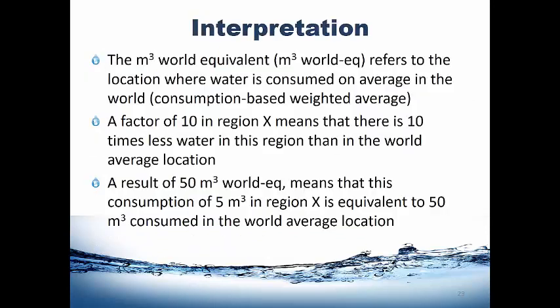To interpret AWARE: the cubic meter world equivalent refers to the location in the world where water is consumed on average, because it's a consumption-based weighted average. A factor of 10 in a specific region X means there is 10 times less water in that region than in the world average location — since the fraction is inverted. A result of 50 cubic meter world equivalent, from a consumption of 5 cubic meters, means that consumption would be equivalent to consuming 50 cubic meters in the world average location. The idea is to bring different water consumptions to the same denominator for comparison based on how much water remains per area.